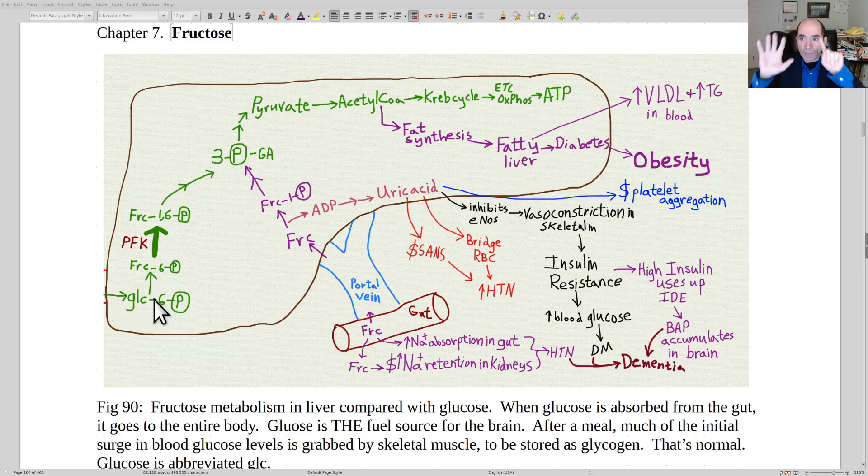The beginning of the pathway at the six-carbon phase is tightly regulated and this is the key enzyme, PFK, phosphofructokinase. The liver is all about handling glucose.